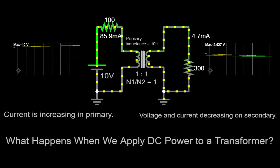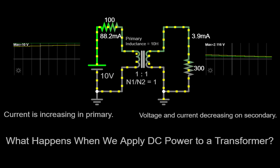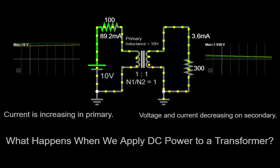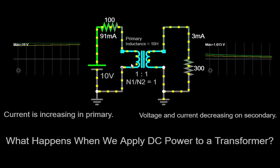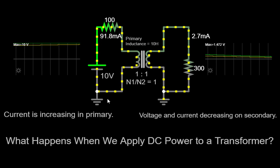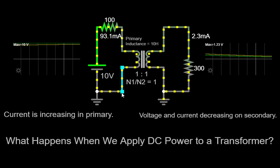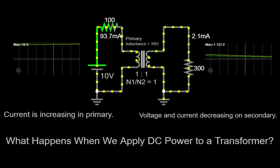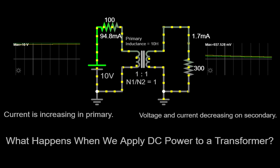However, it's important to note that when DC power is applied, the primary winding still creates a constant magnetic field within the transformer's core. As a result, a current known as the magnetization current is present. This current circulates within the primary winding, but it does not transfer power to the secondary winding. Instead, it serves to magnetize the core.